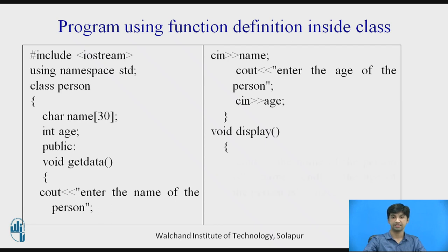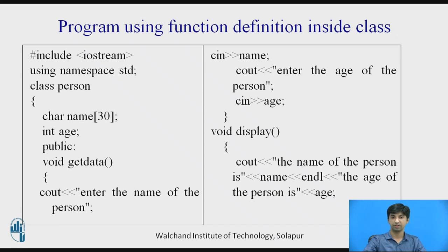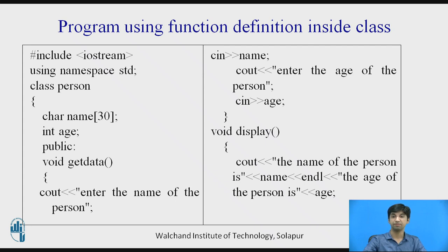In the display function, I use cout with the insertion operator to display 'The name of the person is', then the insertion operator followed by the variable name. I use 'endl' — which works like '\n' in C — to terminate the line. Then the age of the person is printed on the next line. After ending the function, I end the class.